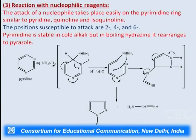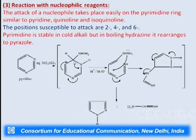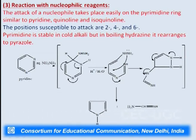Pyrimidine also reacts with nucleophilic reagents. The attack of a nucleophile takes place easily on the pyrimidine ring, similar to pyridine, quinoline, and isoquinoline. The susceptible positions for nucleophilic attack are 2, 4, and 6. Pyrimidine is stable in cold alkali, but in boiling hydrazine it rearranges to pyrazole. Hydrazine attacks as a nucleophile, and after hydrolysis the ring opens and gives a rearranged product which undergoes rearrangement to give pyrazole — thus the six-membered pyrimidine is converted into a five-membered pyrazole structure.